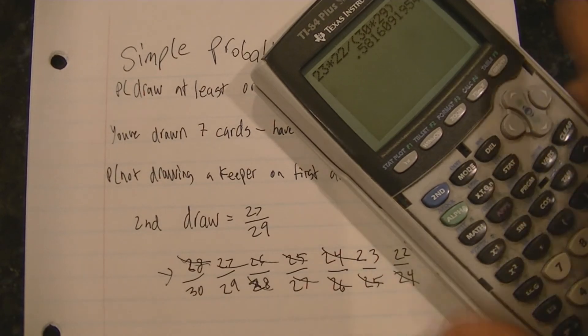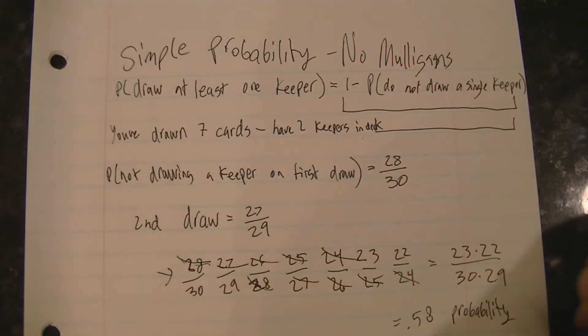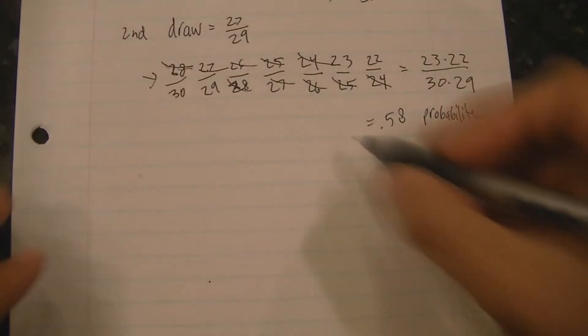And you'll find that the probability to not draw a single Keeper in any of your first seven draws is 0.58.